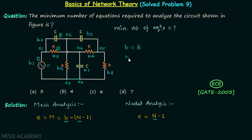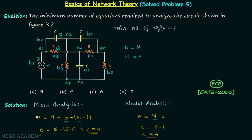The total number of principal nodes is equal to 5. Putting these values into the mesh equation: E = 8 - 5 - 1 = 4 equations. From the nodal equation: E = 5 - 1 = 4 equations. So we need 4 equations for mesh analysis and 4 equations for nodal analysis of this network. Therefore the answer is option B, which is 4.